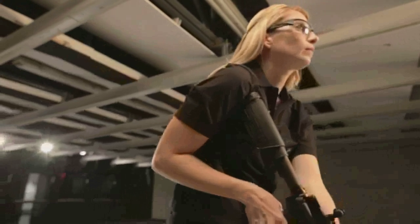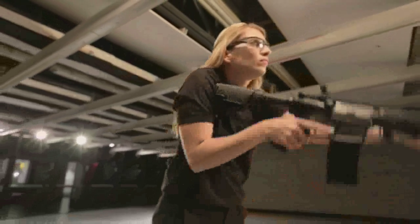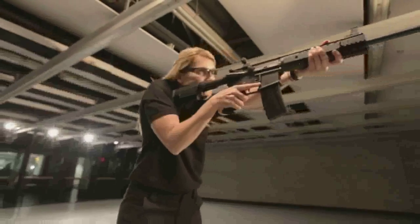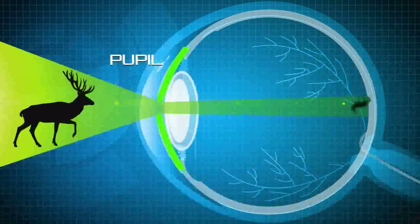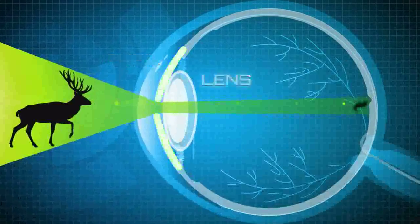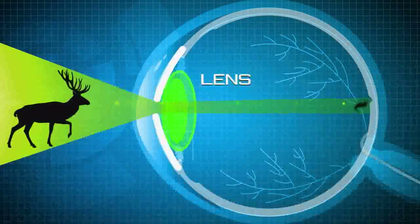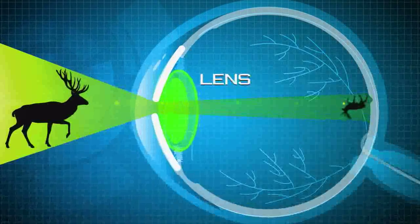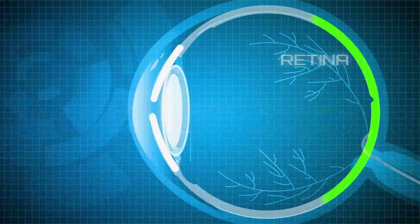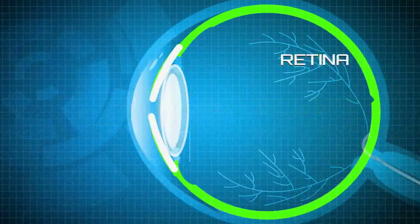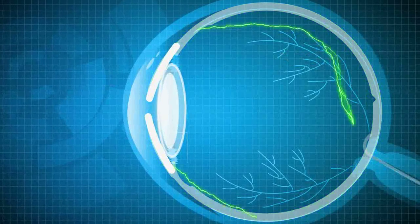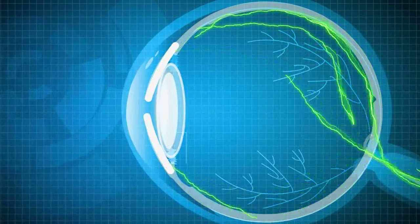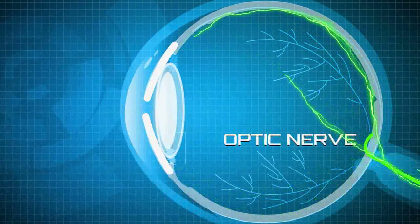When we see an object, light rays enter through the cornea, which refracts the rays before they pass through the pupil. The pupil adjusts the intensity of the light rays before they reach the lens. The lens then focuses the rays and an image is sent to the retina. The retina transforms the image into electrical impulses, which are sent to the brain through the optic nerve.